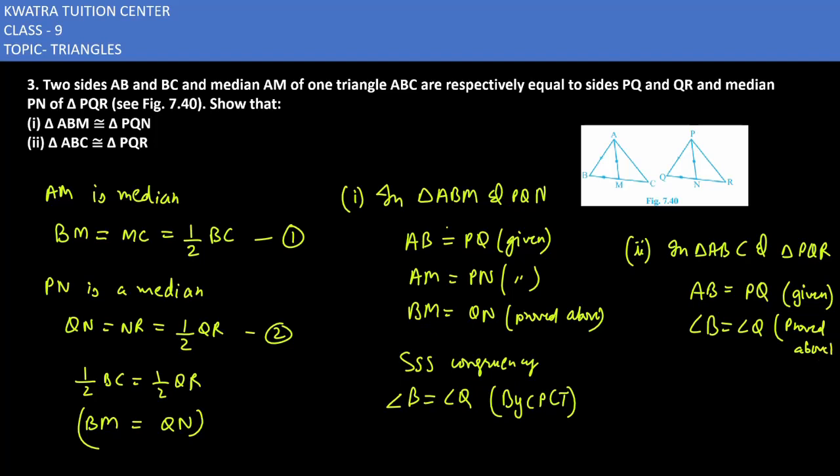This is proved above. And third part we need, so that our congruency is complete. We know that our third part should be BC is equal to QR. This is given. And we can say that they are congruent by SAS congruency.